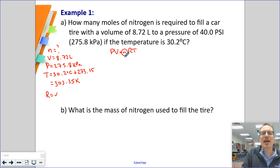We are going to solve for N, so we're going to move R to the denominator and T to the denominator. My formula is going to become N equals PV over RT. One mark for those two formulas, memorized and moved around. We're now going to substitute in. My pressure is 275.8 kilopascals times my volume of 8.72 liters.